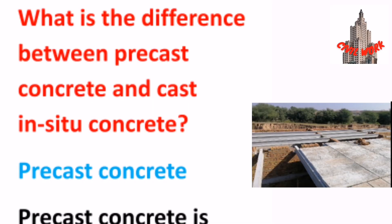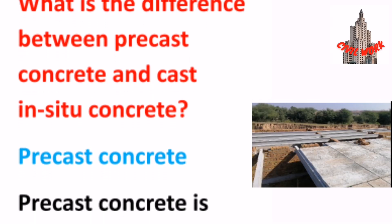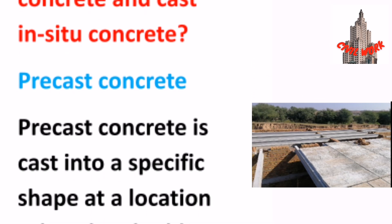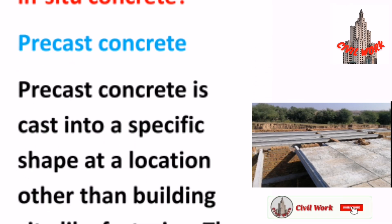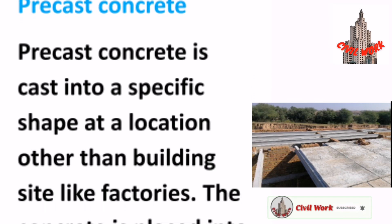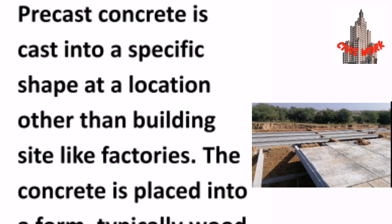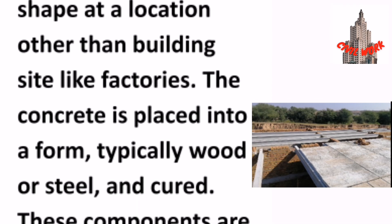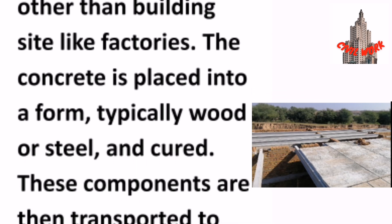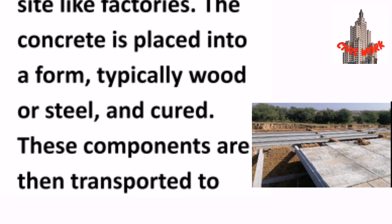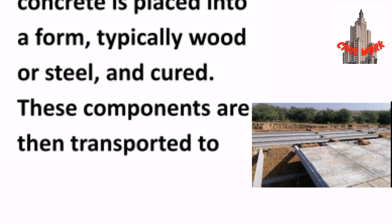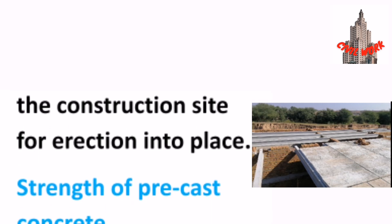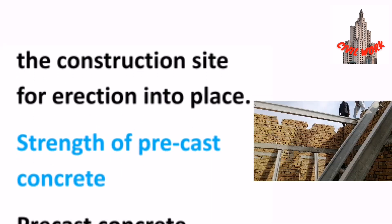What is the difference between precast concrete and cast-in-situ concrete? Precast concrete is cast into a specific shape at a location other than the building site, like factories. The concrete is placed into a form, typically wood or steel, and cured. These components are then transported to the construction site for erection into place.